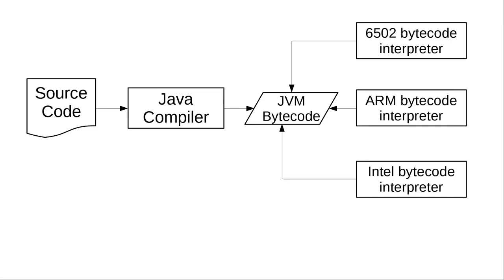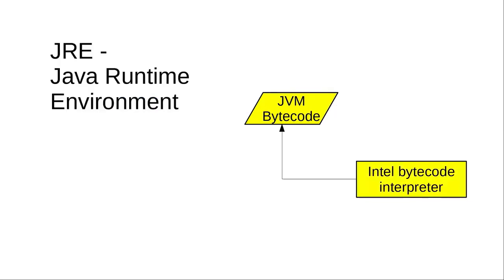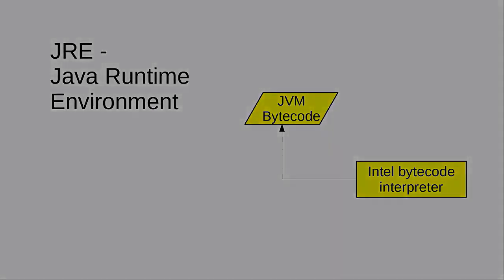Here's the workflow. You write your program in Java, compile it to bytecode, and then run it on the JVM, the Java Virtual Machine. Once you have a working program, anyone with the Java runtime environment — which is the bytecode interpreter — can run it.